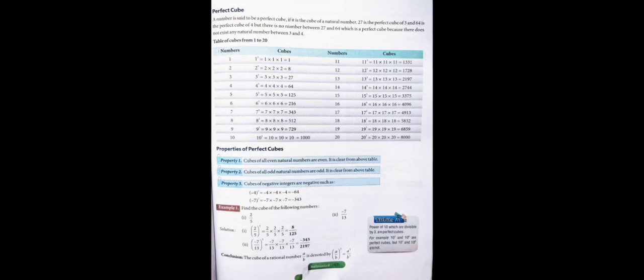Let's look at example part 2: cube of −7/13. Here the numerator is −7, so we write it 3 times, and 13 in the denominator is also written 3 times. The numerator gives us −343, and the denominator gives us 2197 (13³). So we must multiply itself twice both numerator and denominator — that is how we find the cube of a fraction.